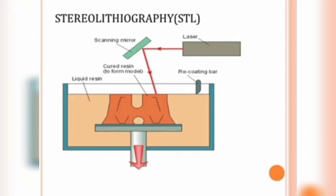First, Stereolithography. In Stereolithography, there are several parts. There is a container box, a platform, and a liquid resin. There is a photopolymer material. There is a scanning mirror, and after the scanning mirror, we adjust the laser light. There is also a laser light source.